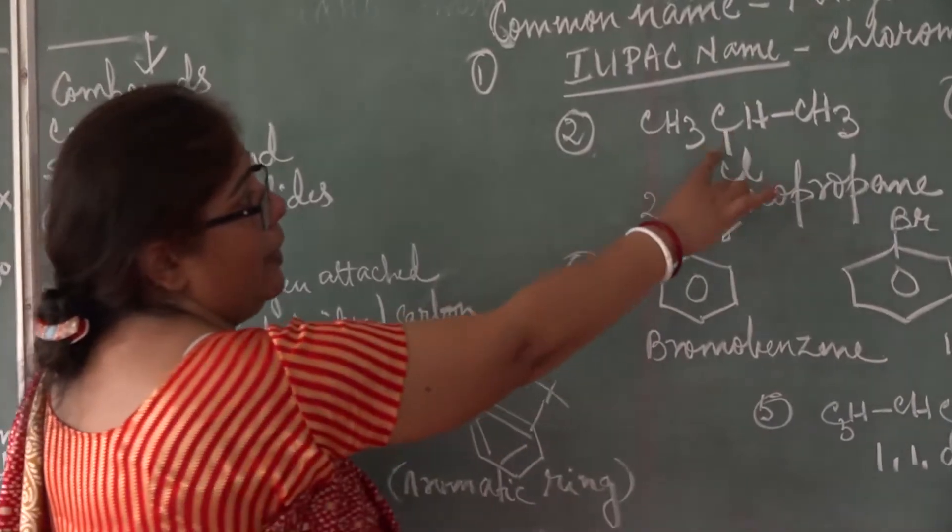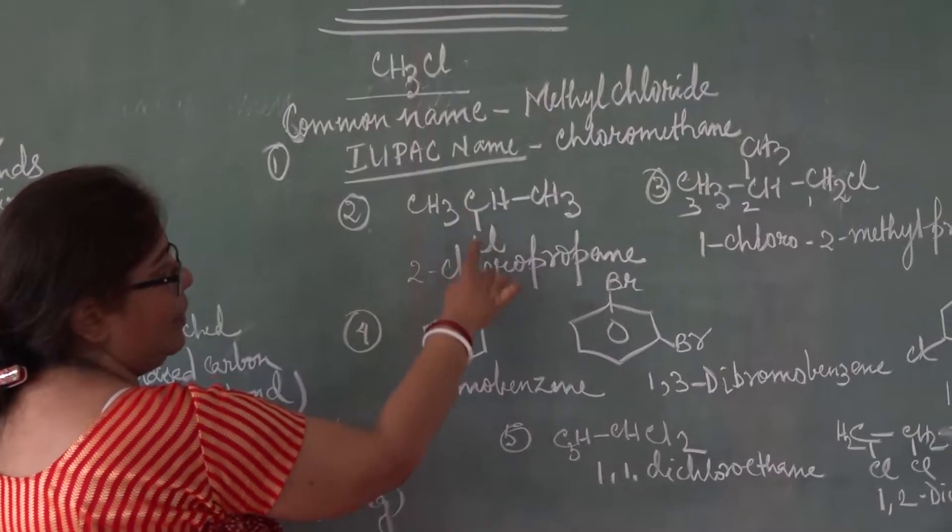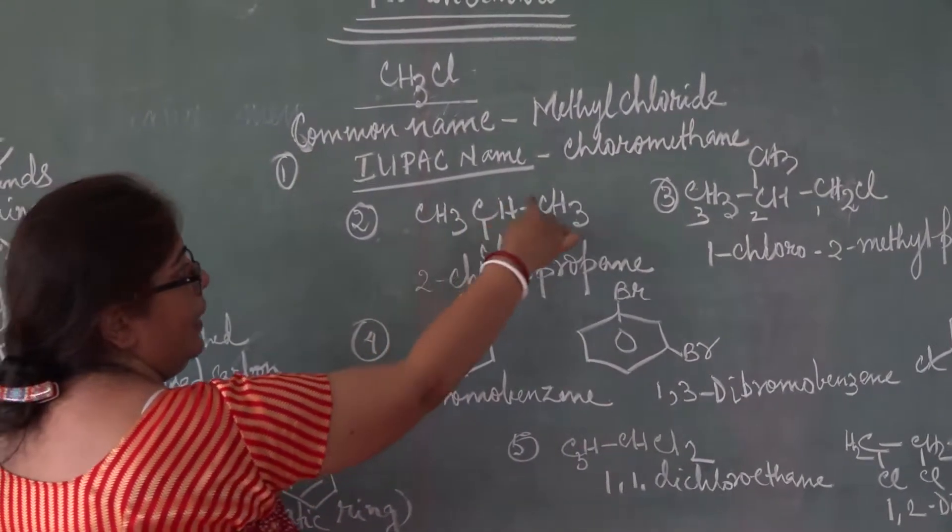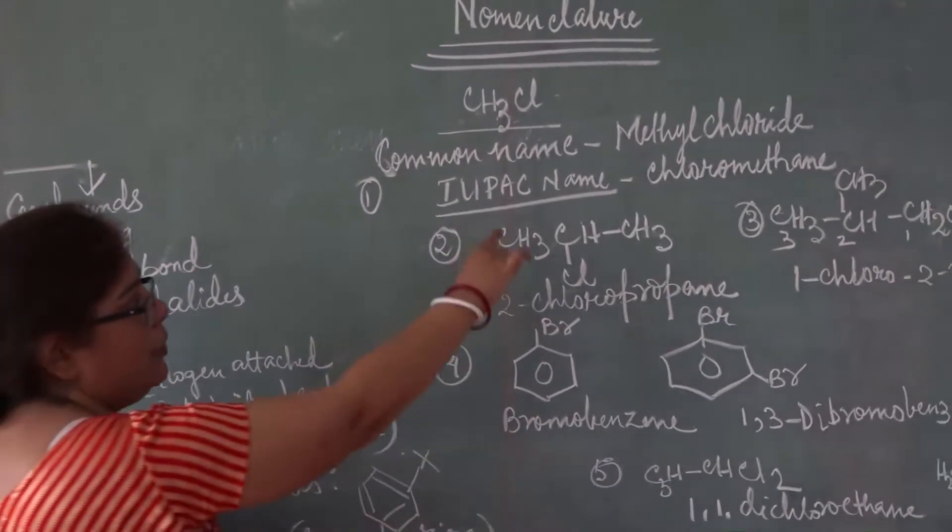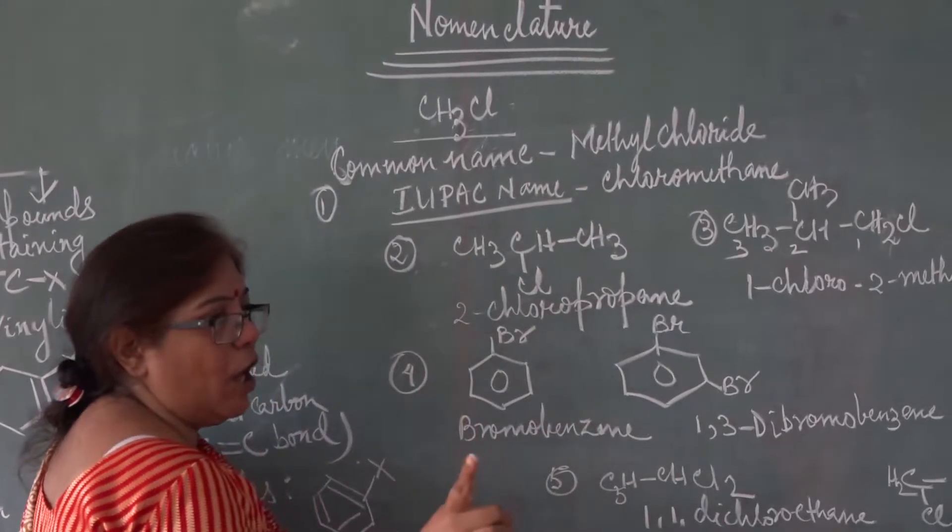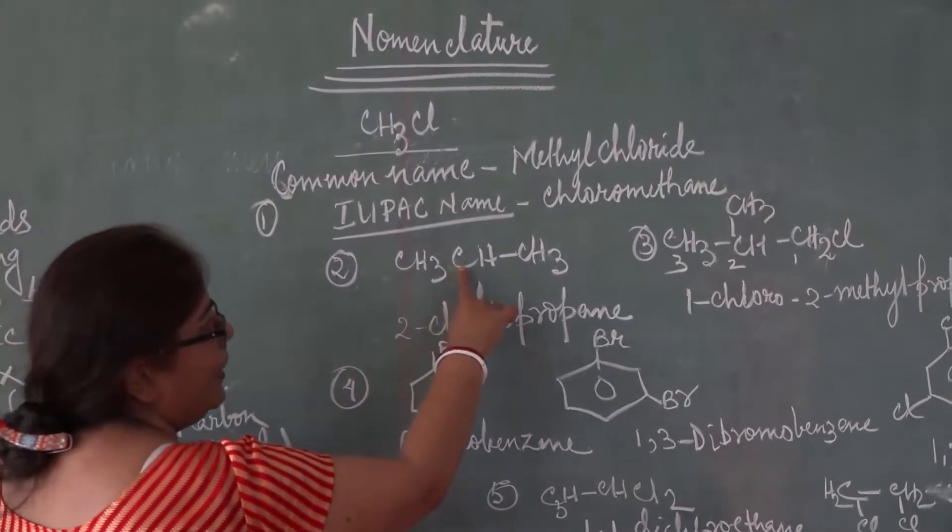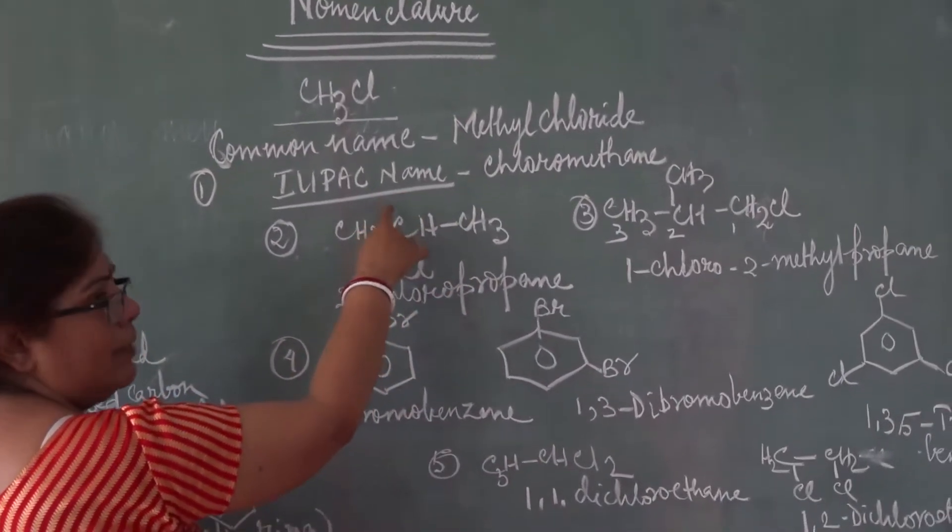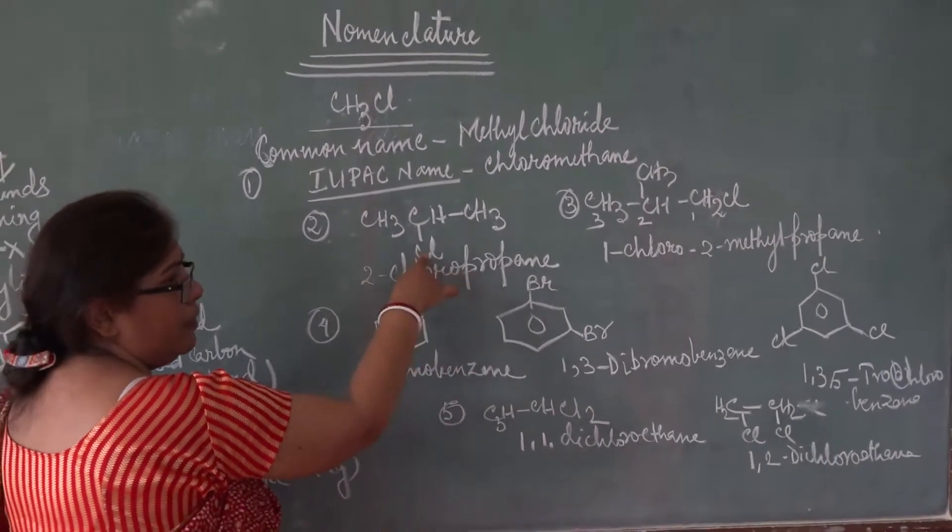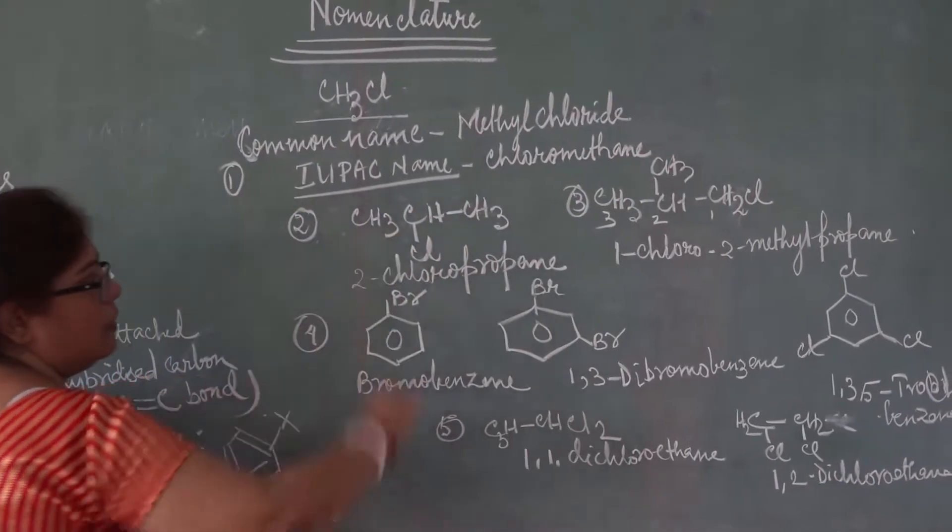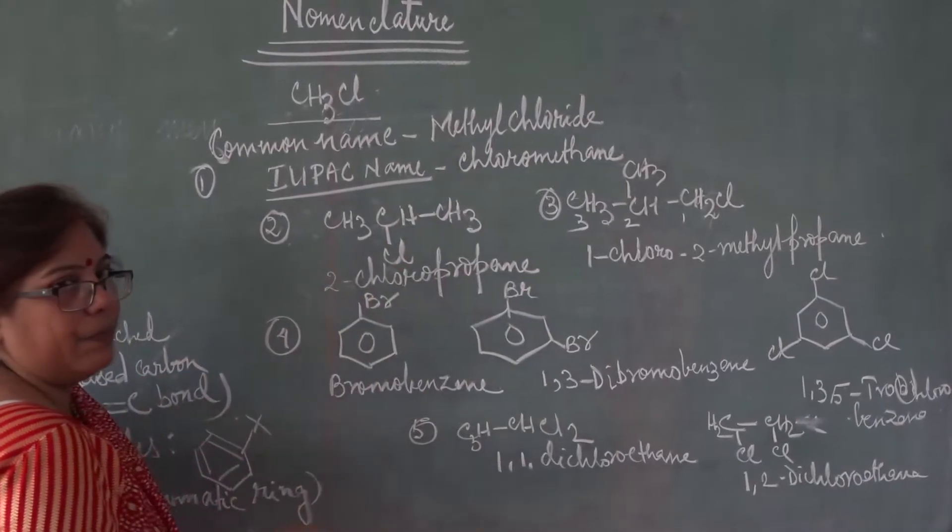Next one. Position. Suppose this one: CH3, CH, CH3 and in this carbon, CF attached. How do you name it? Counting one, two, three. Derivative is of propane. Three carbons, propane. And in second position, there is CF. So one, two, name it. So two, hyphen, chloro, this one. And one, two, three, propane. Two, fluoropropane. Clear?